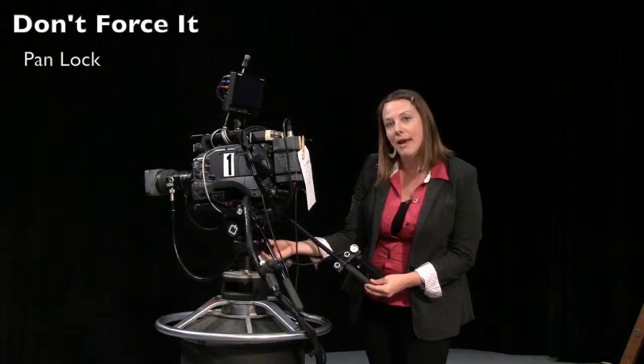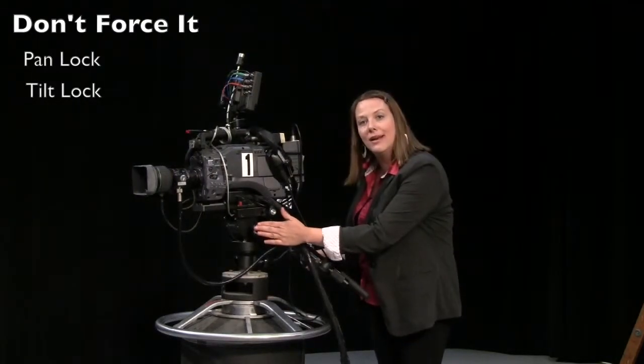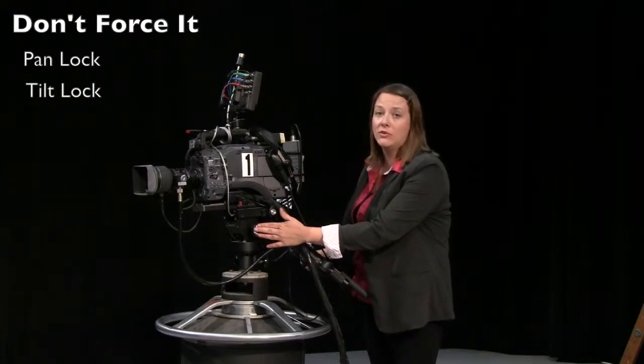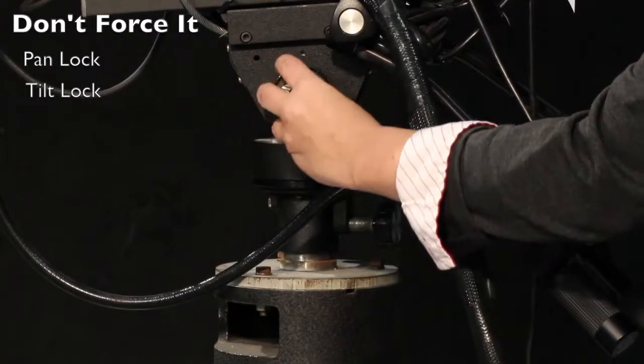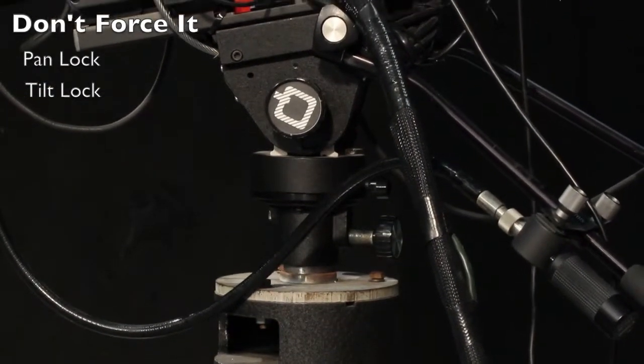Once you loosen the pan lock, you'll notice there's also a tilt lock. The tilt lock here is going to prevent the camera from tilting up or down. So make sure that you've loosened the tilt lock before you try to make your camera tilt down or tilt up.